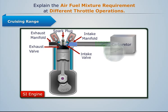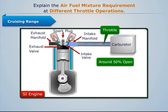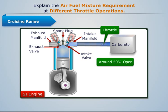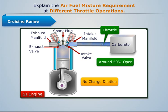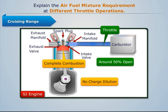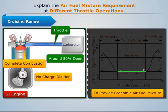Since the throttle is opened to around 50% during the cruising range, the problem of charge dilution becomes insignificant. Thus, proper combustion takes place. Hence, it is desirable that in this range the carburetor provides the economic air-fuel ratio, which results in a lean air-fuel mixture.